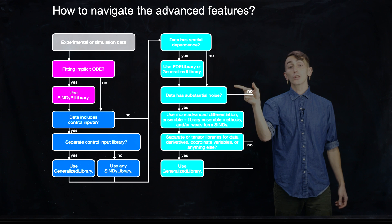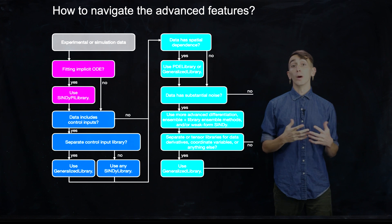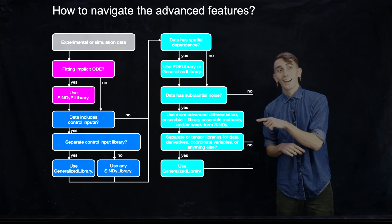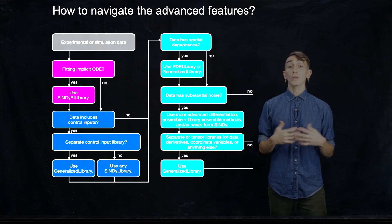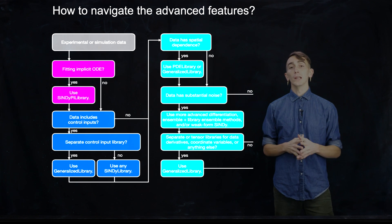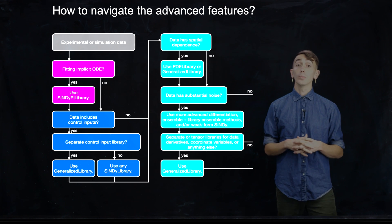So we asked, does the data have spatial dependence? And then the other major question is, does the data have substantial noise? And there are a number of SINDy variants that really help the robustness of this method against noisy data. So I've mentioned a few here. So using more advanced differentiation methods, we have ensemble and library ensemble methods, and a weak formulation of SINDy. All these things improve robustness to noise, and I'll be describing them in more detail in the coming videos.